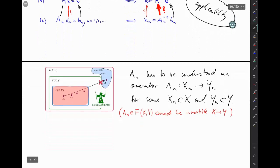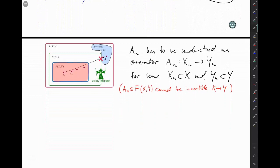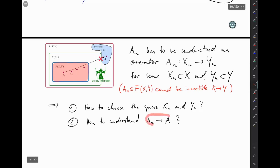And of course, this is bringing some new questions with it. First question, how do we choose these spaces X_N and Y_N between which A_N is acting? And second question, how do we understand this convergence A_N strongly to A, if A_N is not even acting on the same spaces as A is?